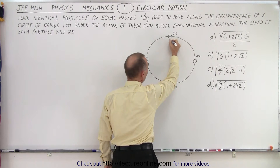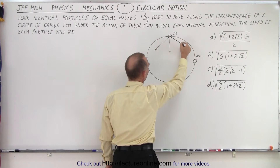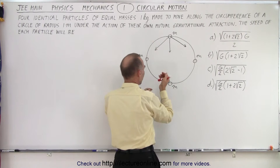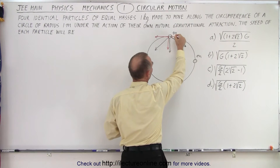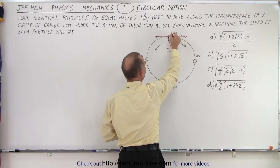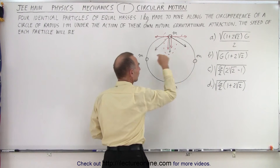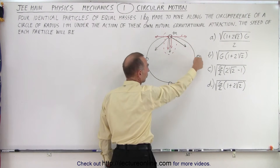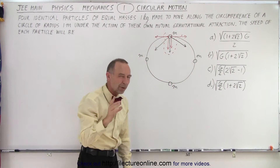If you take a look at one of the particles — let's say this one right here — you can see there's going to be a force of attraction towards this particle, a force of attraction towards this particle, and a force of attraction towards this particle. If you consider the forces from the two adjacent particles, there will be a component this way and a component in this direction from each. These two transverse components cancel each other out. That means the net force from those two particles, plus the direct force from the opposite particle, would be pulling on this particle — giving us a centripetal force acting on it.